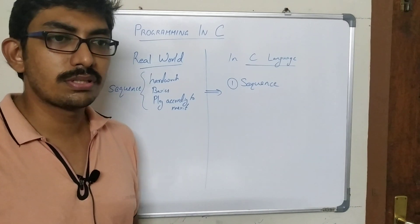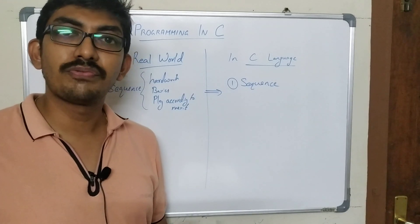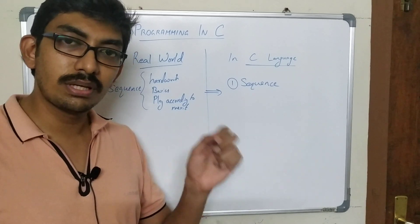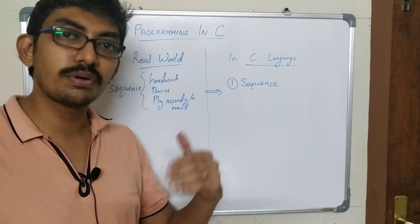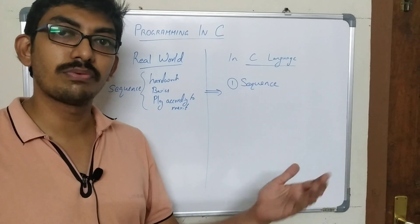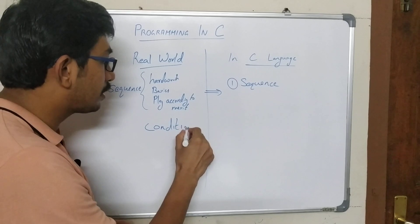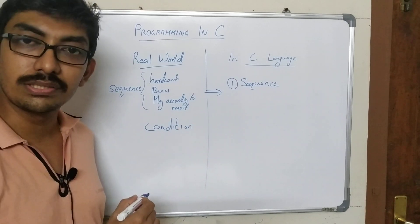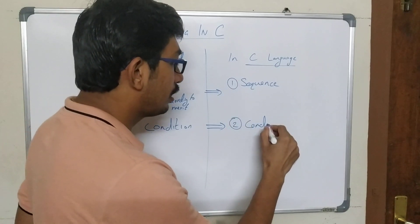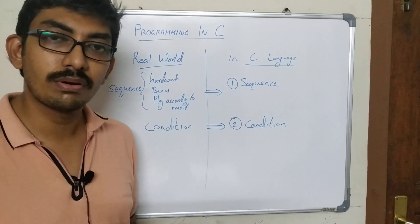We will see another real-life problem. Suppose I am going to book a ticket in IRCTC. If you are booking for a senior citizen, you have a discount in the rate, which means according to the age there will be a difference. If you are a senior citizen your rate will be one, and if you are not a senior citizen the rate will be different. So based on a condition, the action could change. There should be some mechanism to do programming based on a condition.